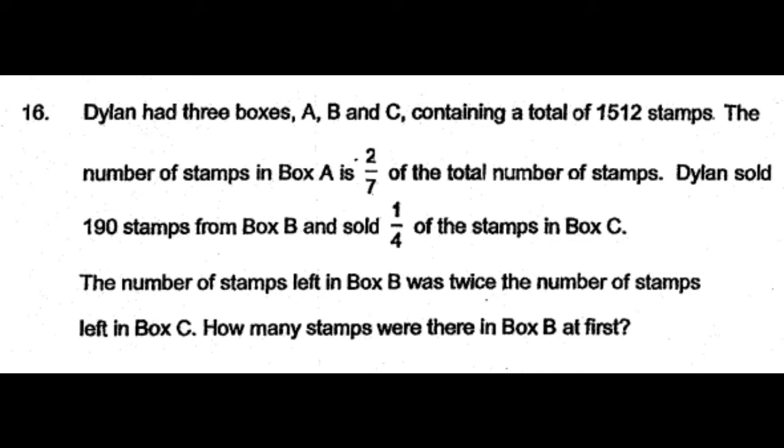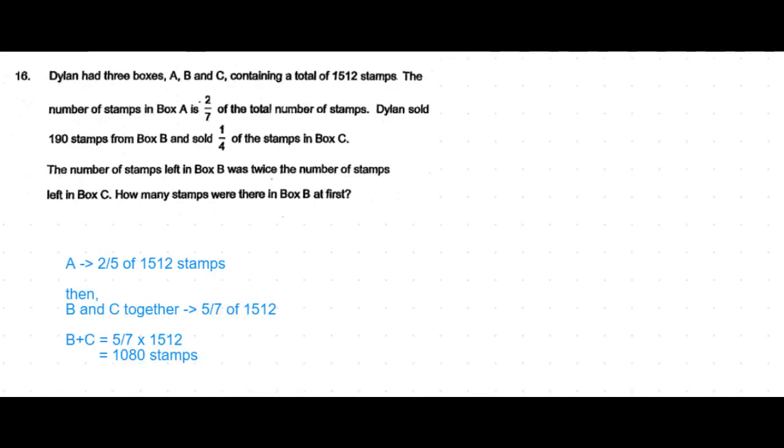Now, we're given that box A had 2/7 of the 1512 stamps, which means box B and C together have the remaining 5/7 of 1512 stamps.